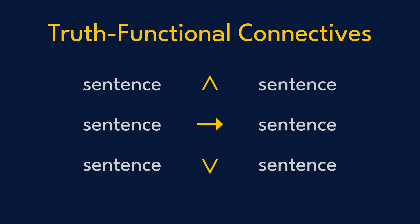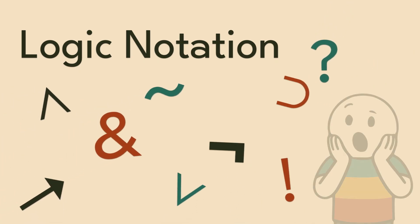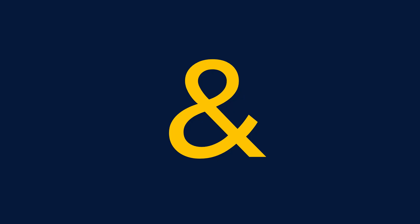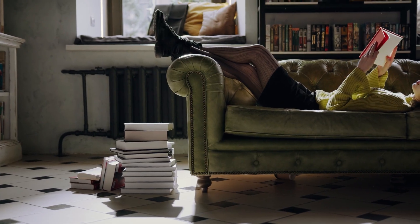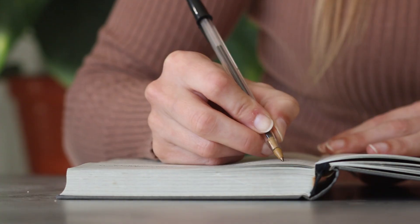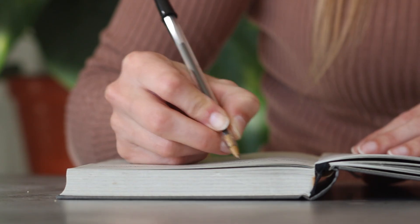Super quick side note: logic notation is not totally standardized. I use one symbol for 'and,' but your textbook might use a different one. I use the arrow for 'if-then,' but your professor might use the horseshoe. I use one symbol for negation; you might often see another. Don't worry — predicate logic is predicate logic. What you learn here applies no matter what your textbook looks like. Just make the minor adjustments and you'll be fine.